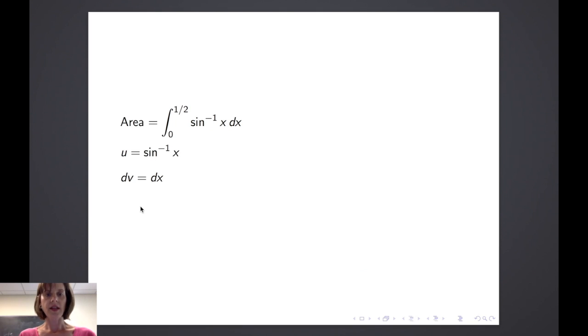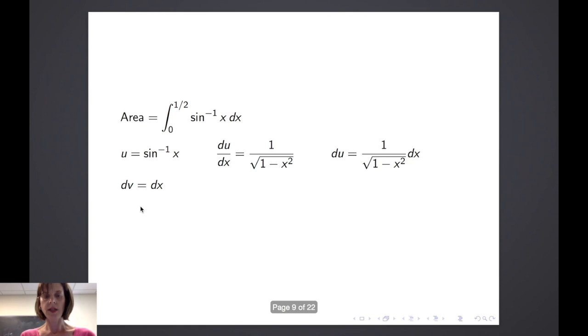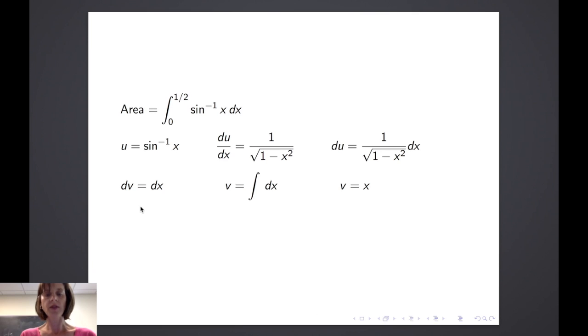So, as you will see in the next slide, if we let u equal inverse sine of x, dv is equal to dx. If we take the derivative of the inverse sine of x, we'll get 1 over the square root of 1 minus x squared. So du is equal to 1 over the square root of 1 minus x squared dx. dv is equal to dx, so v will simply be the integral of dx, or being the simplest antiderivative, v is equal to x.